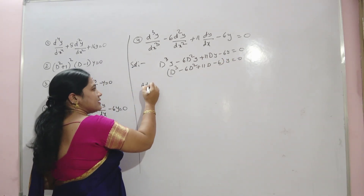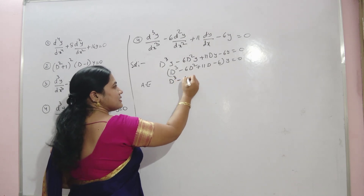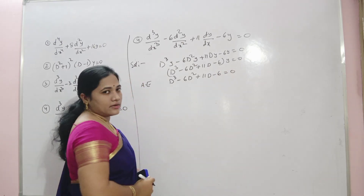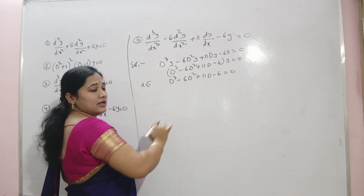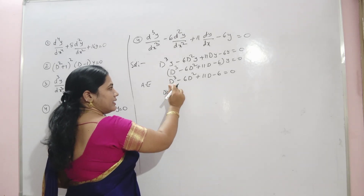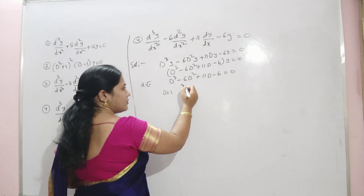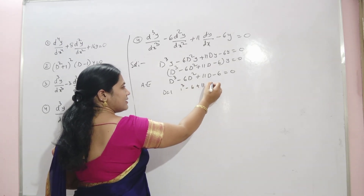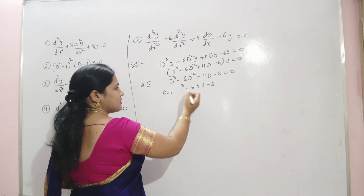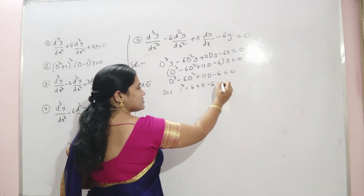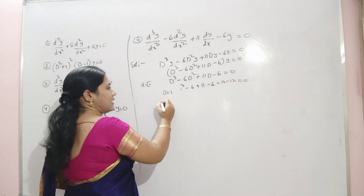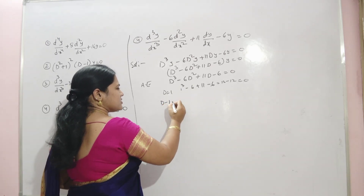The auxiliary equation is D³ − 6D² + 11D − 6 = 0. To find the roots, put D = 1: 1 − 6 + 11 − 6 = 0. So D = 1 is a root, meaning (D − 1) is a factor.